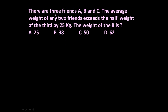The given problem is: there are three friends A, B and C. The average weight of any two friends exceeds the half weight of the third by 25 kg. The weight of B is — 25, 38, 50, or 62 kg?